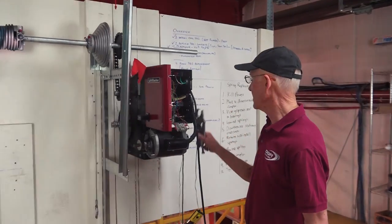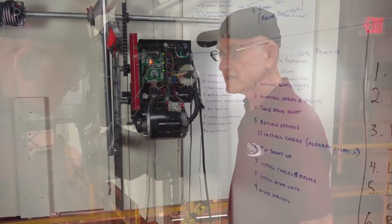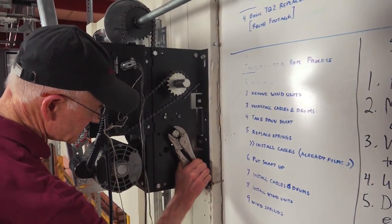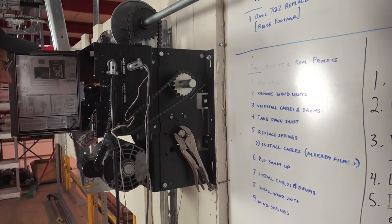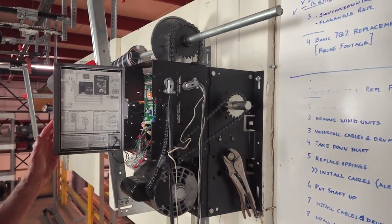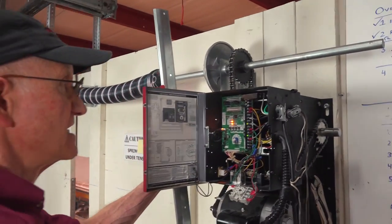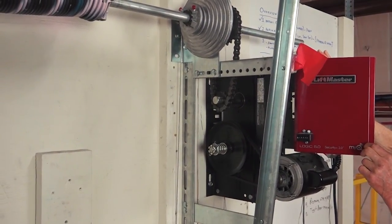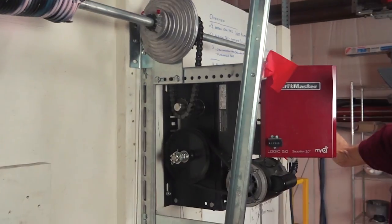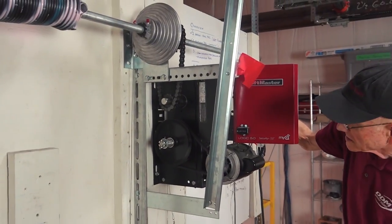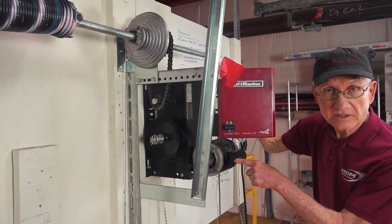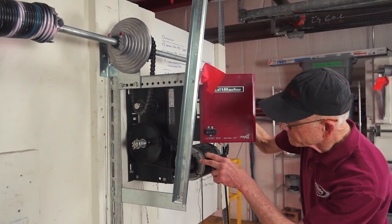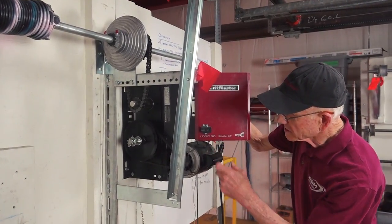I'm going to put this vise grip on the clutch shaft. Put the vise grip on the clutch shaft and then push the up button. And when I do that, notice when I have the vise grip on there, if I push the open button, it starts to turn. Did you see the motor turning? The motor starts to turn, but the pulley doesn't turn.